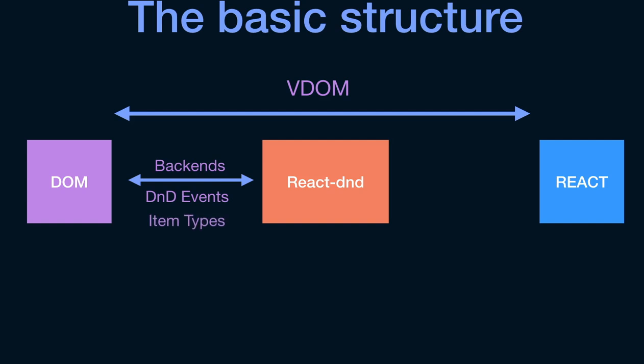Between React DnD and the DOM, communication happens through backends and involves DnD events — whether it's dragging, is-dragging, drag start, drag stop, drop, and so on. There are also item types, which are abstract concepts we'll need to explain. The way React DnD takes useful information from the DOM is through something called monitors. So things happening between React DnD and the DOM go through backends, item types, DnD events, and monitors.